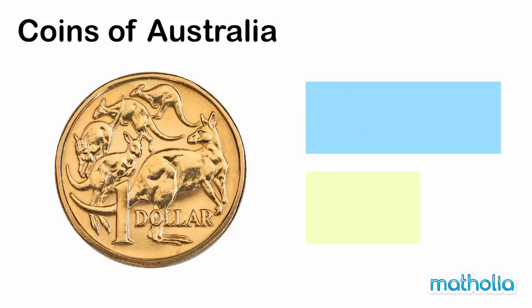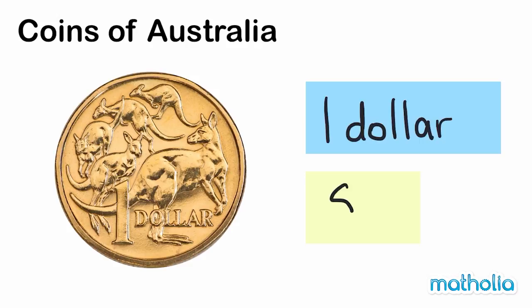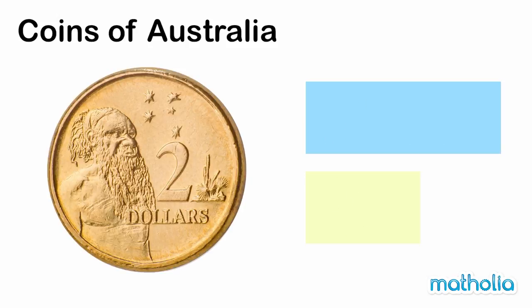This gold coin is a one dollar coin. One dollar. We write one dollar like this — a big letter S with a line down the middle and the number one. This is a two dollar coin. Two dollars.